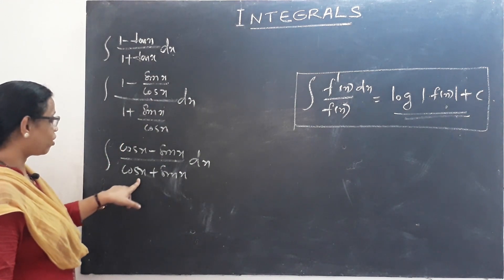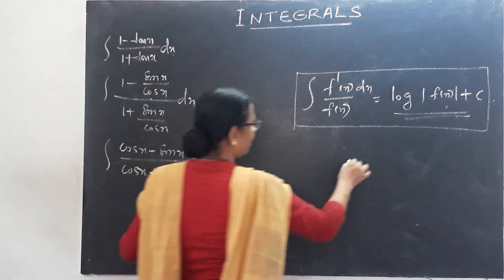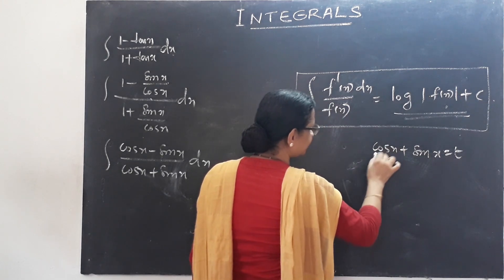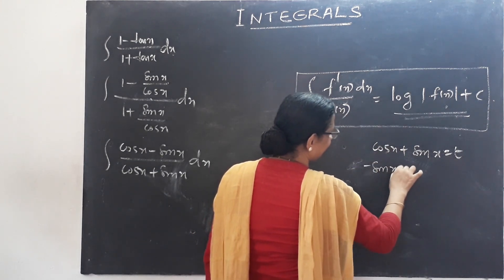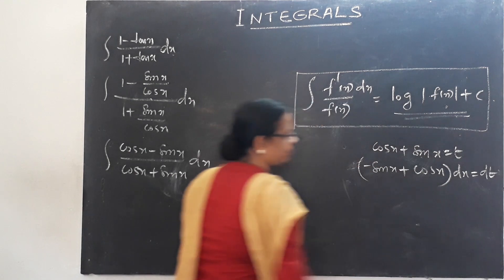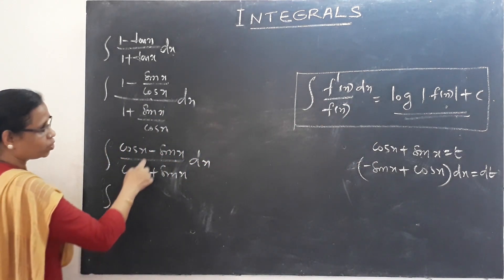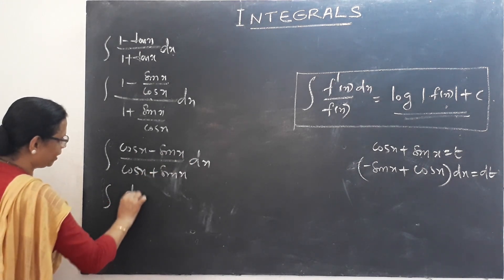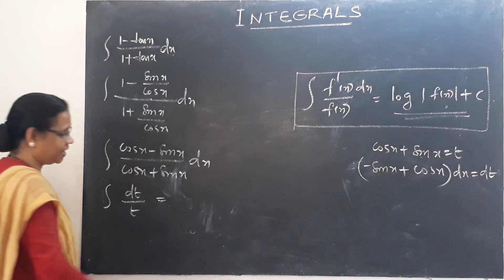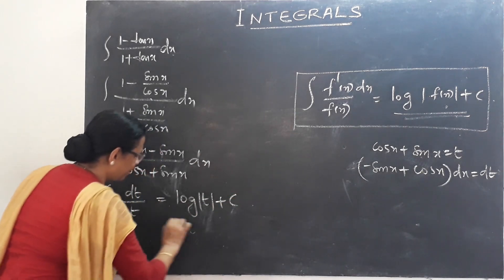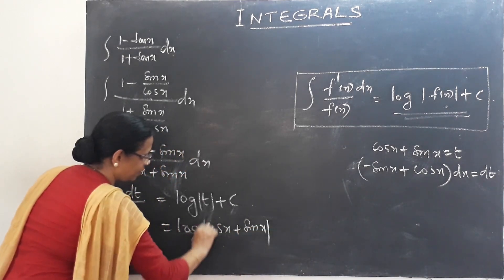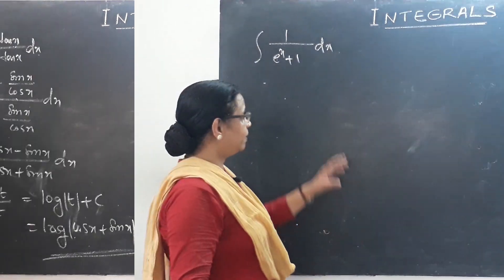Converting: (cos x − sin x)/(cos x + sin x) dx, so cos x cancels. Let cos x + sin x = t, then differentiating gives (−sin x + cos x) dx = dt, so (cos x − sin x) dx = dt. Therefore the integral equals dt/t = 1/t, which gives log t = log(cos x + sin x) plus c.